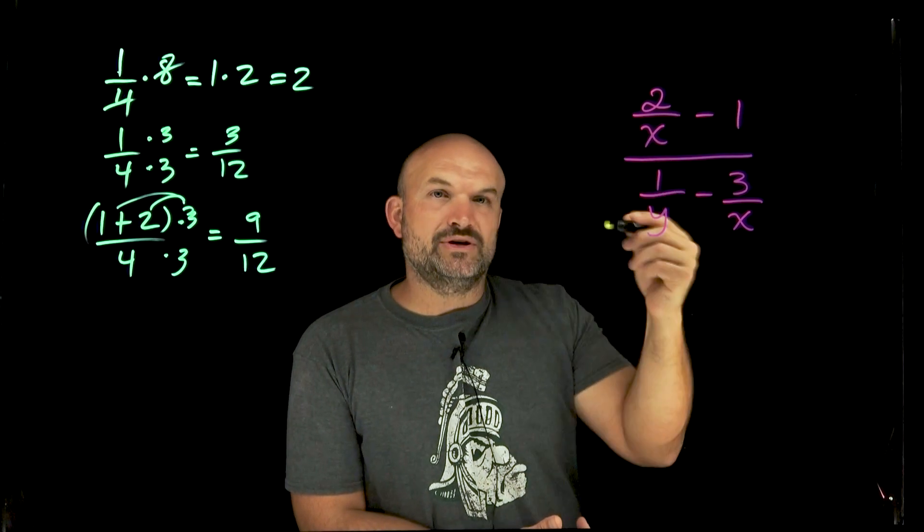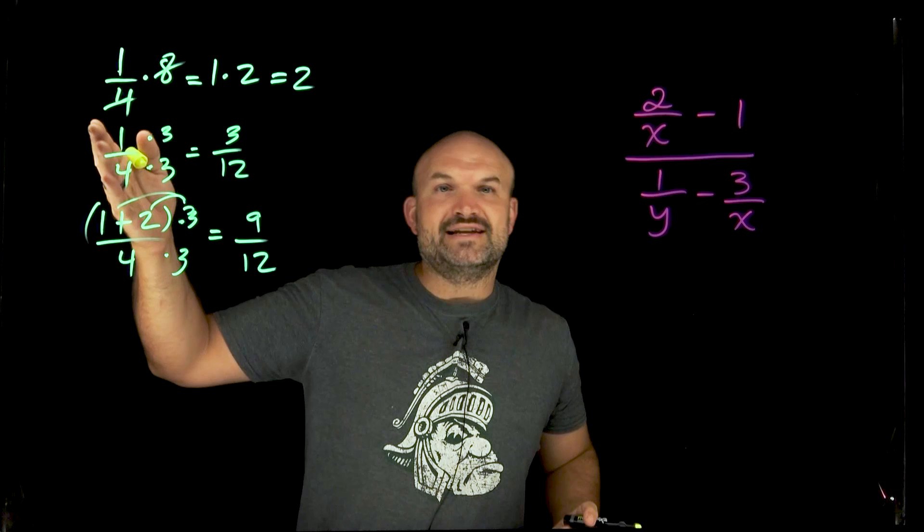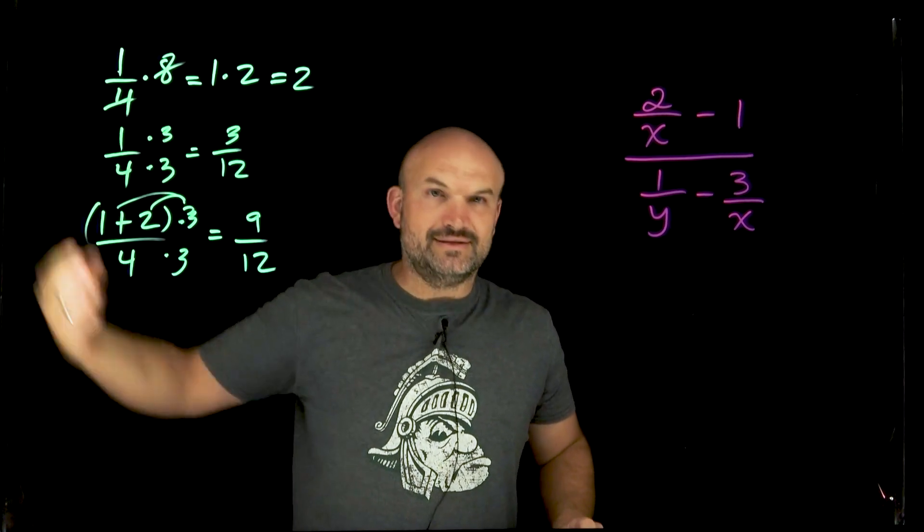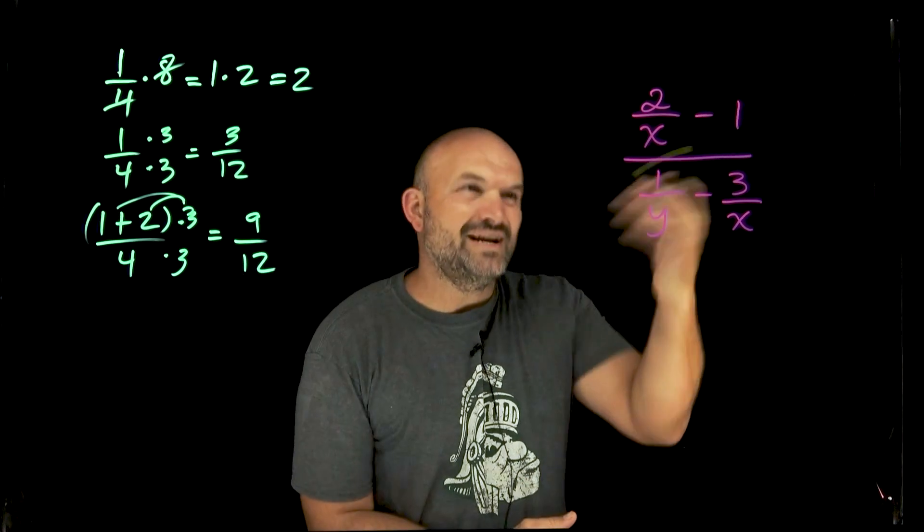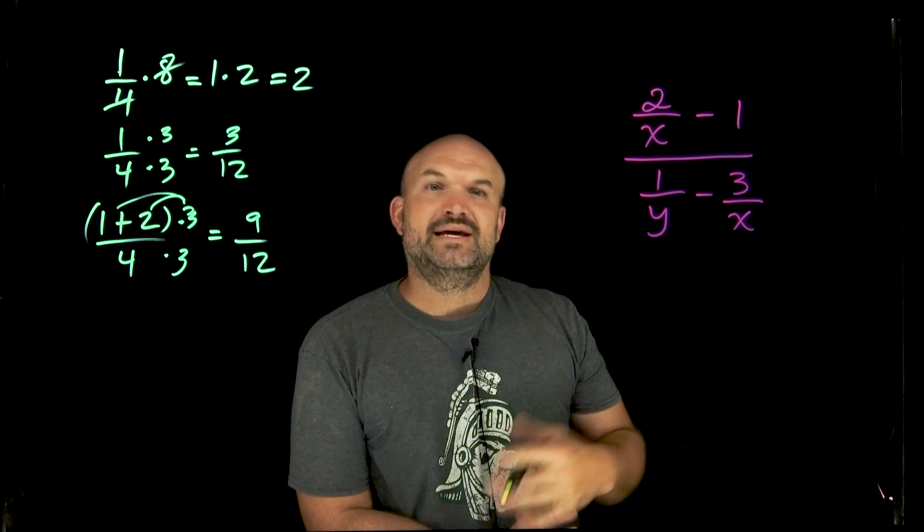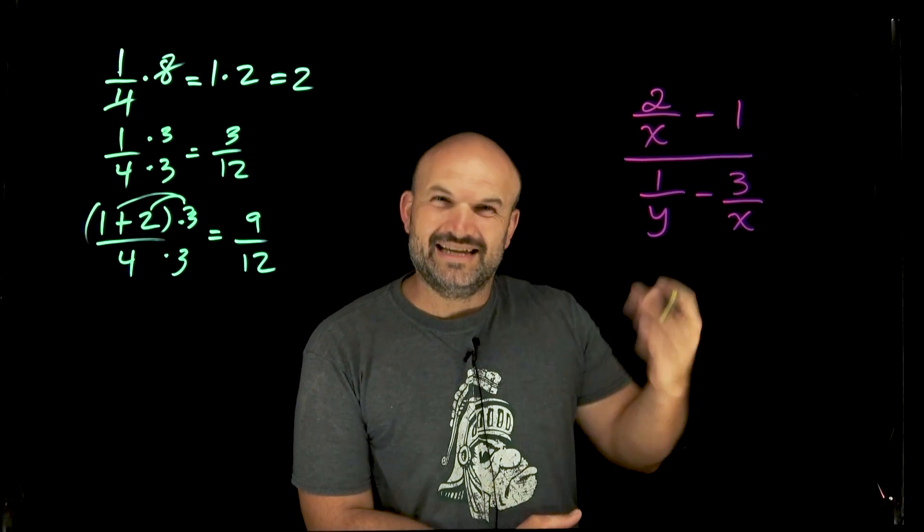Because I need to be able to find what my denominators divide into. Now 4, we know it divides into 4, 8, 12, 16, 20, 24, 28, 32. What does x divide into? Well, x divides into x, x squared, x cubed, x to the fourth, x to the fifth, and it keeps on and on and on. Same thing with y.